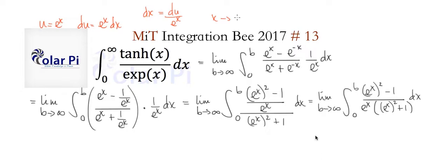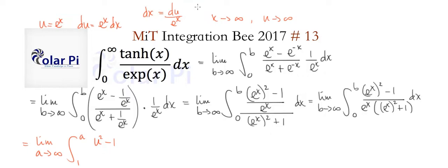Observe that as x goes to infinity — since b here represents x going to infinity — u also goes to infinity, because e^x goes to infinity. Now since we're in terms of u, let's change b to a. We have the limit as a goes to infinity, integrating from one to a, because the lower limit becomes e^0 = 1. We replace the numerator with u^2 minus one, divided by u (that u is e^x), then u^2 plus one. Since dx = du over e^x and e^x = u, we cancel that u and get du over u^2.